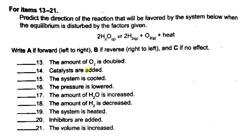Number 13: the amount of O₂ is doubled. The stress here is increasing the concentration of one of our products. To balance this, the equilibrium will shift to the left to use this extra amount of O₂. So this favors the reverse reaction — letter B, right to left.